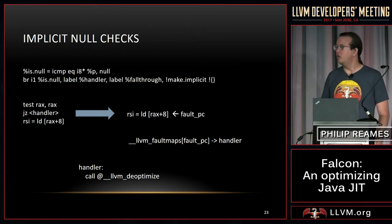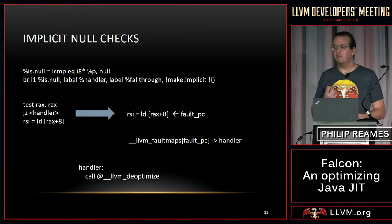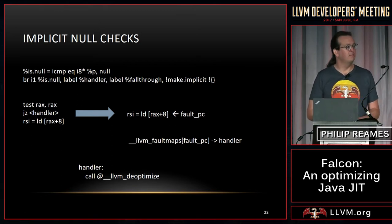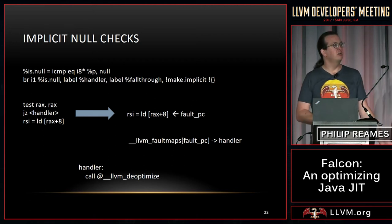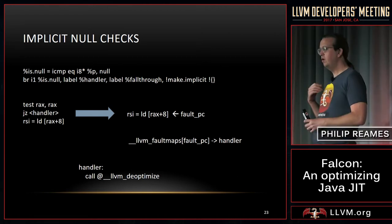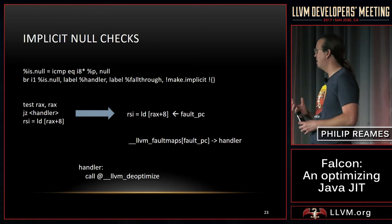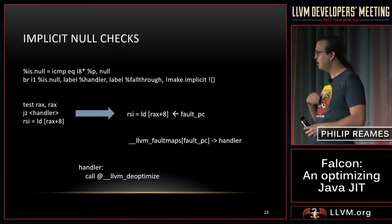Another speculative optimization is implicit null checks — a really simple observation. If you have a language with lots of checks for null, and those null checks are never actually taken because nothing's ever null in practice, you can use a signal handler to detect if something was actually null when accessed. Implicit null checks remove the explicit null check in favor of metadata on the load that says: if you seg-faulted here with a null pointer, go over to this handler to handle the null check. You have to be willing to trust your profile to know null checks won't happen here, because the cost of that segfault is roughly a million to a billion times more expensive than the dynamic cost of the explicit null check.